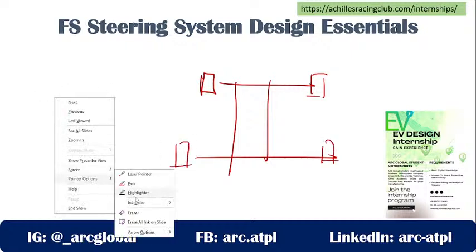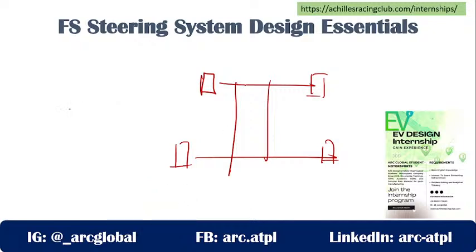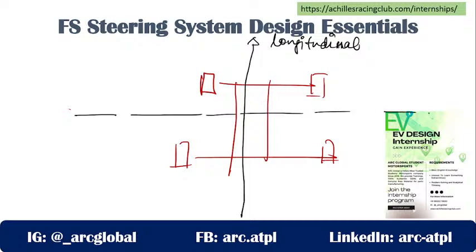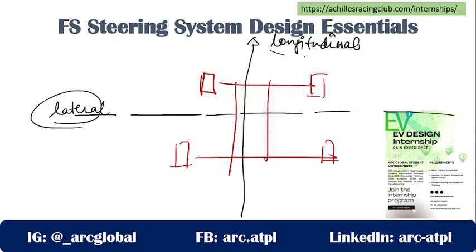In the top view of the vehicle: the front-to-rear direction is the longitudinal direction, the sideways direction is the lateral direction, and the axis passing from top to bottom is the transverse axis. So - longitudinal is front to rear, lateral is sideways, and transverse is up and down.